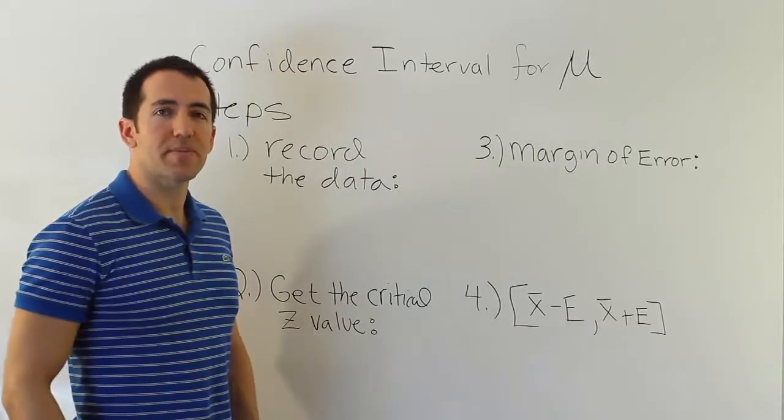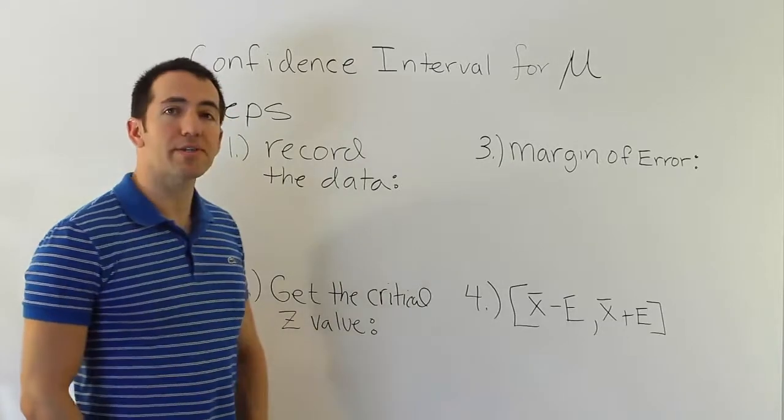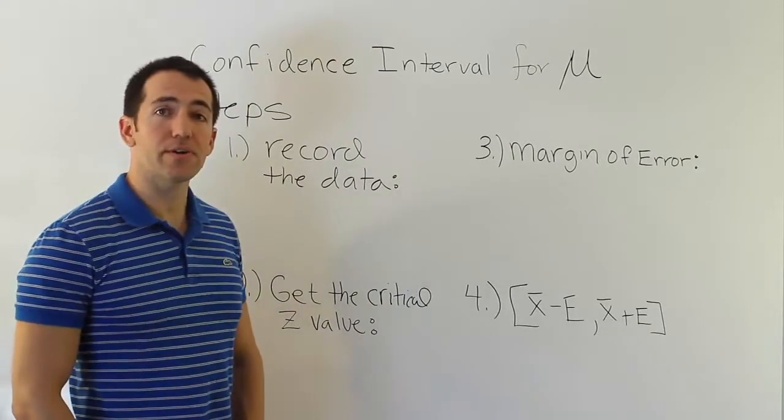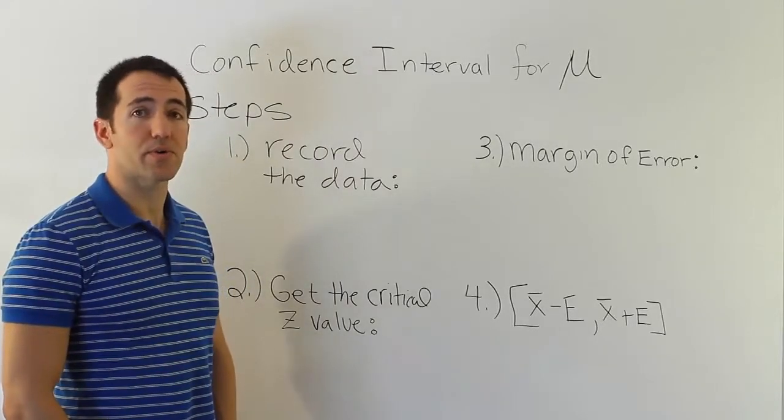We're talking about confidence intervals to estimate the population mean in this video. We're going to assume that we have a large sample size, so our sample size is going to be 30 or larger, so that we can assume that the distribution of x-bar is normally distributed or normal.